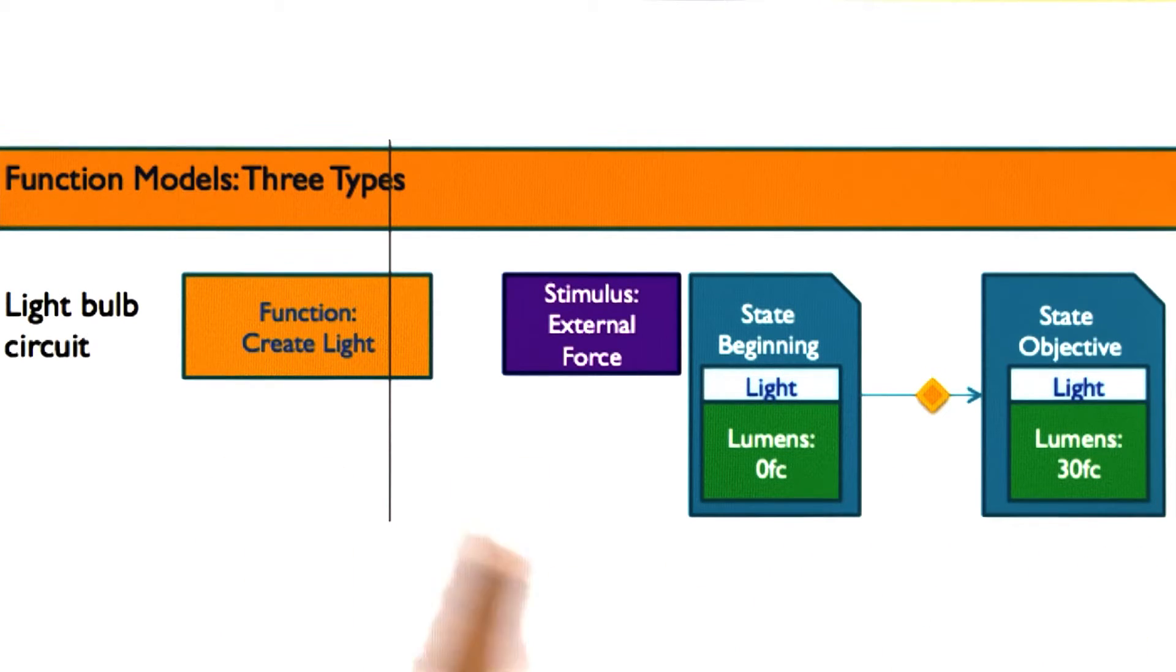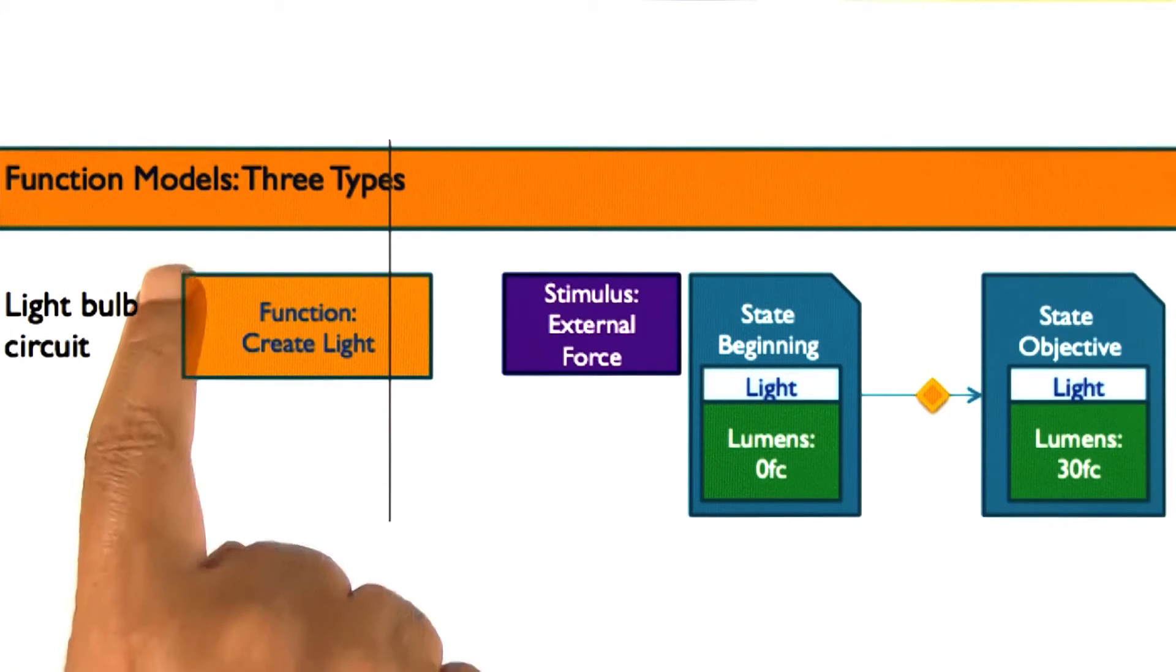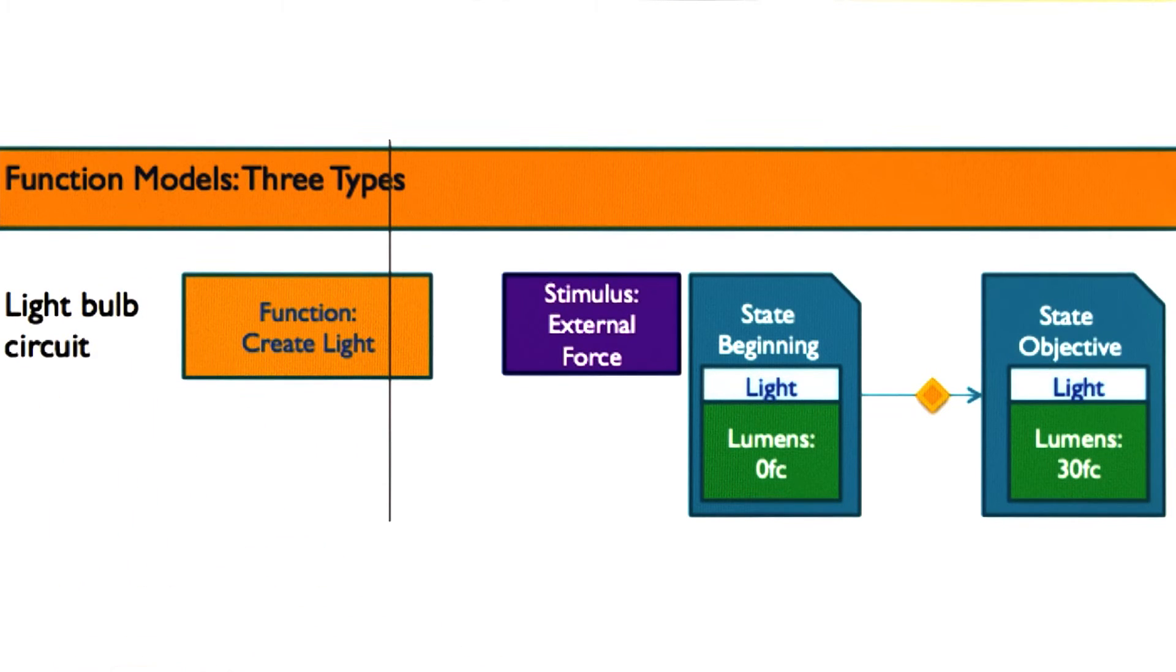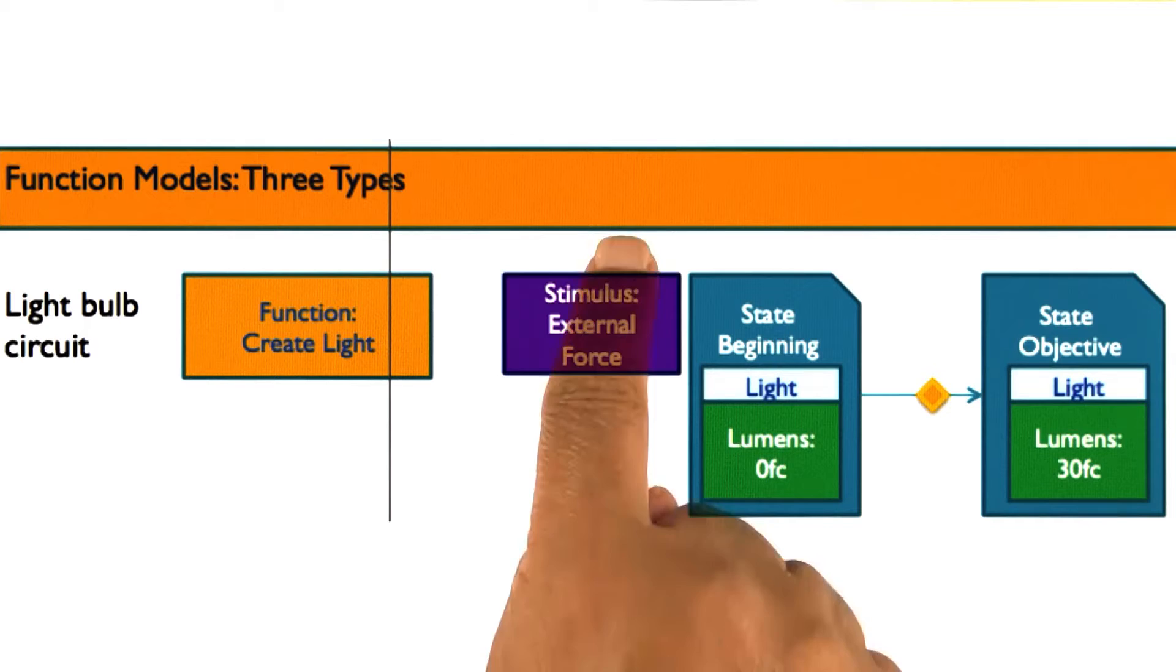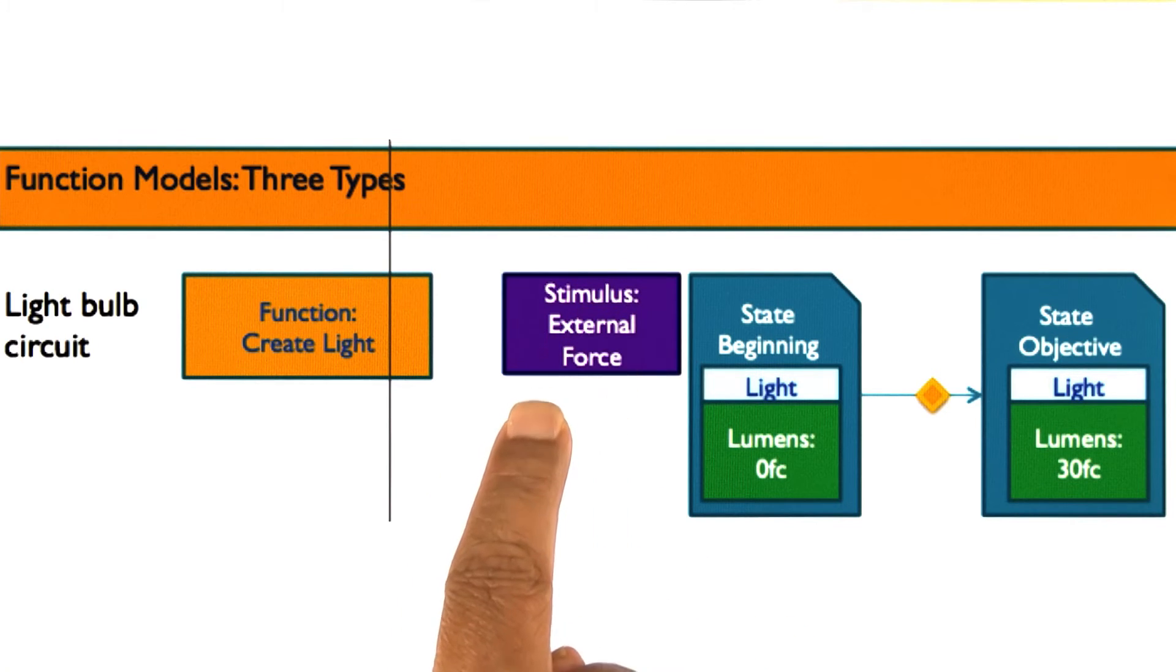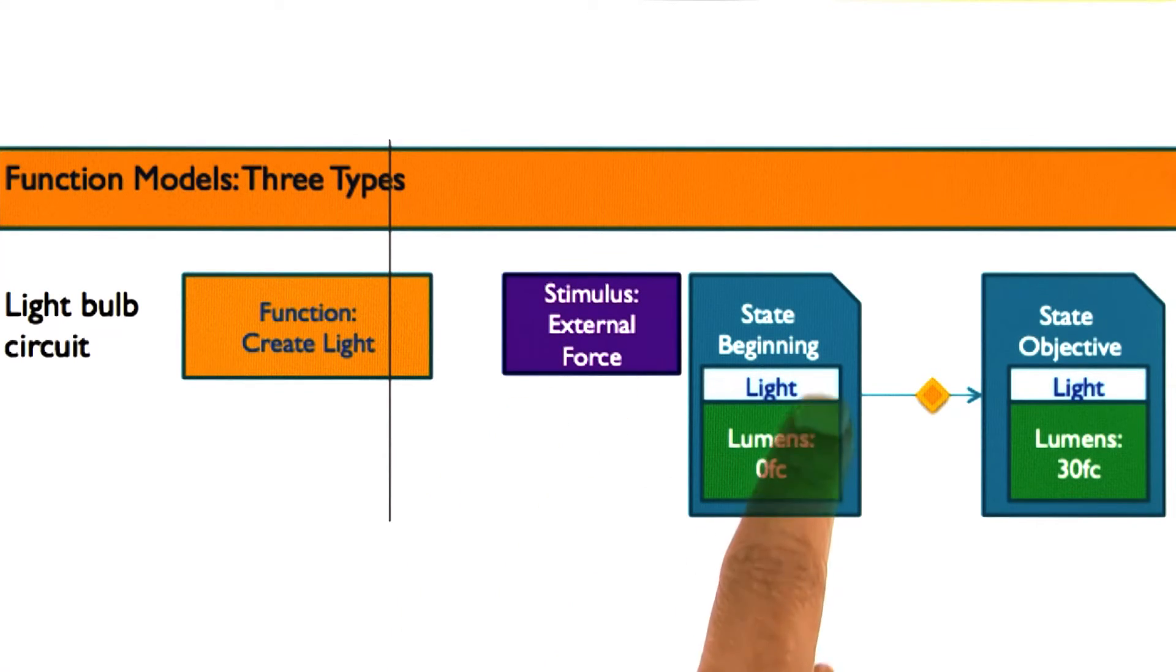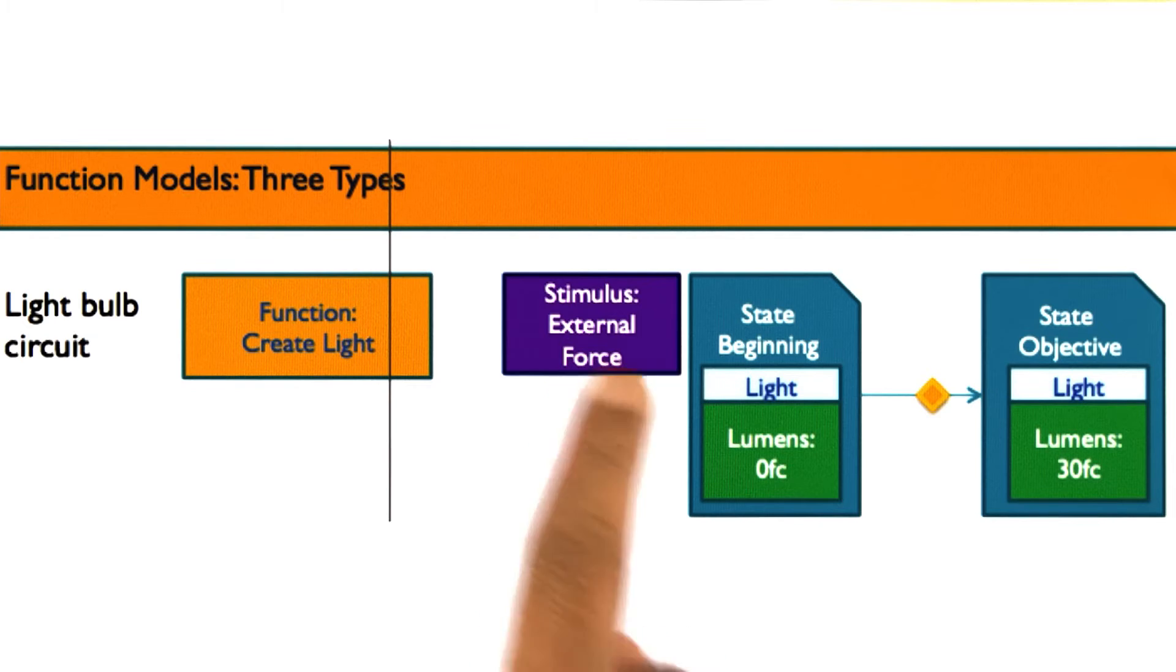Here is a representation of the function. Here is the function create light of that light bulb circuit or the flashlight light bulb circuit. There is some stimulus, some external force on the switch. Initially, there was no light, zero lumens. And finally, there is some light, 30 lumens. This captures the notion that when I press on the switch, light comes out.